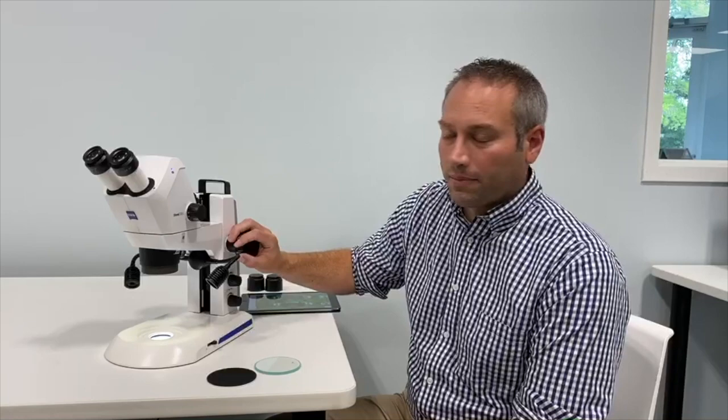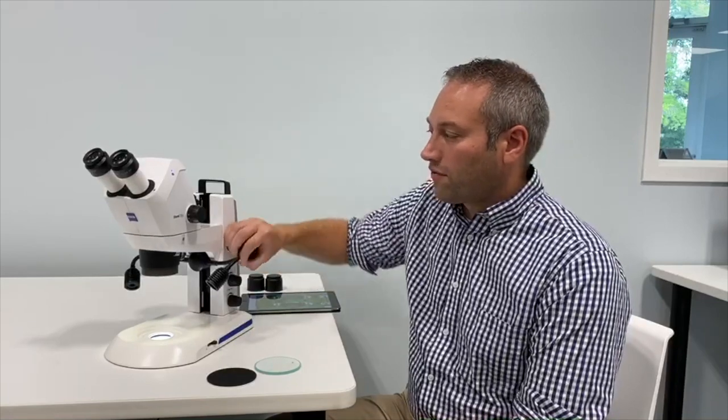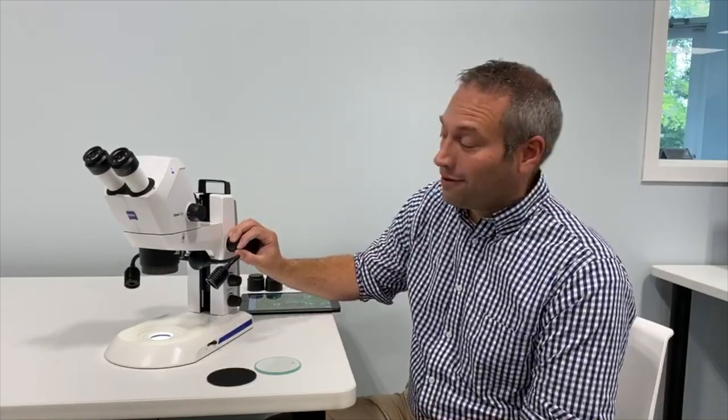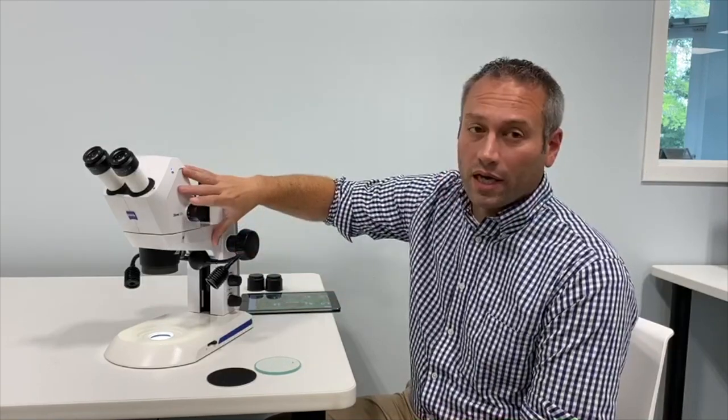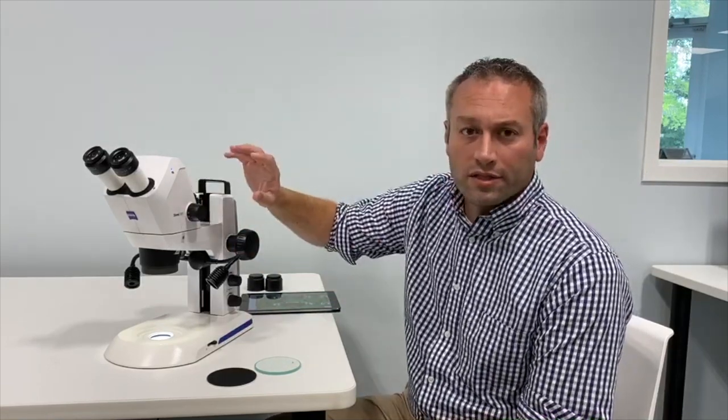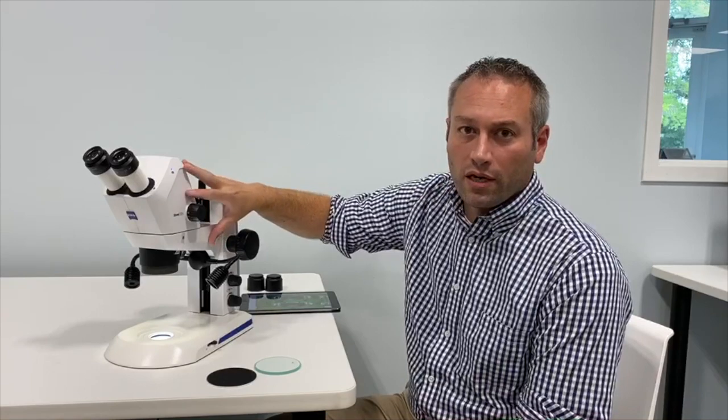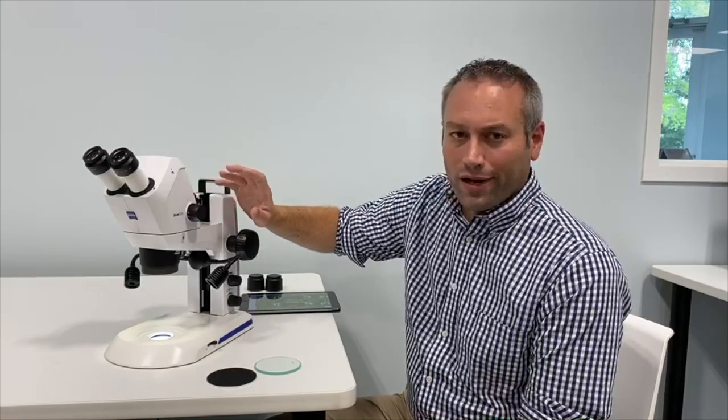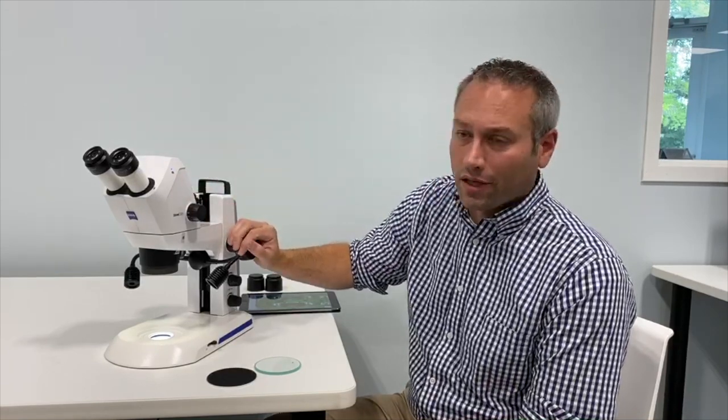This large knob that we skipped is our focus. One extra nice thing about this scope is this body can be mounted on a boom arm. Let's say at a workstation where it can be swung in and out of your way and still grab that look at the part.